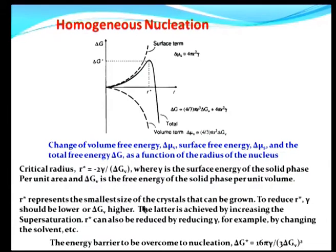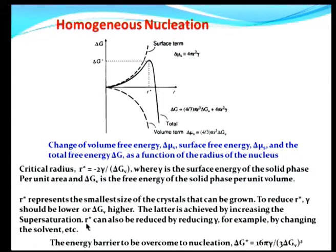One wants to exceed this critical radius R* in order to achieve successful nucleation in a homogeneous circumstance. Therefore, R* represents the smallest size of the crystals that can be grown. To reduce R*, it is shown that R* equals minus 2γ divided by delta G_V, where γ is the surface energy per unit area of the nucleated crystal. One has to either reduce γ or increase delta G_V in order to reduce R*. The reduction of γ — that is, reduction of surface energy — can be achieved by changing the solvent or adding polymers, surfactants, and other agents into the solution.